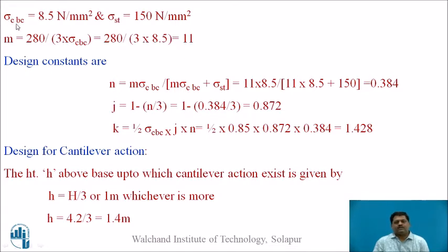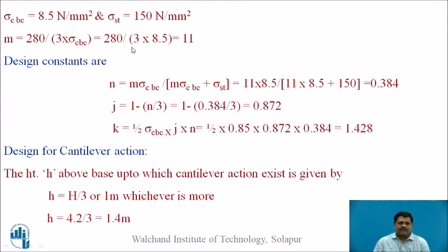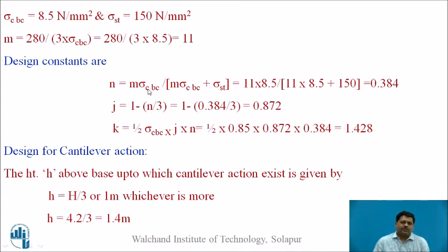The actual design starts here. The permissible bending compression in concrete is 8.5 N/mm² (σ_cbc) and the permissible stress in steel is 150 N/mm² (σ_st) — these are the two stresses in the working stress method. The modular ratio M = 280 / (3 × σ_cbc) = 11. The design constants are: N = 0.384, J (lever arm constant) = 1 − N/3 = 0.872, and K = 1.482. These constants are for M20 grade concrete and Fe415 steel.